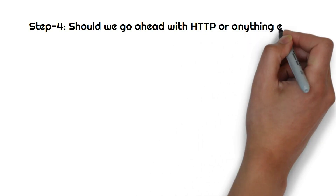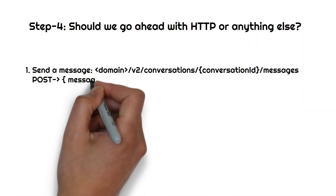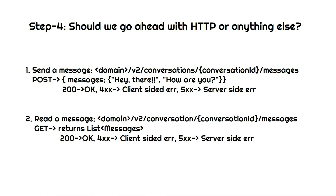Next, should we go with HTTP or something else? I have two APIs here — one to send a message and one to receive a message, with the conversation ID being the ID shared by two persons when they communicate. Sending a message is a POST call to the server with the message in the body, and the server responds with 200 OK. Reading messages is a GET call which fetches a list of messages.